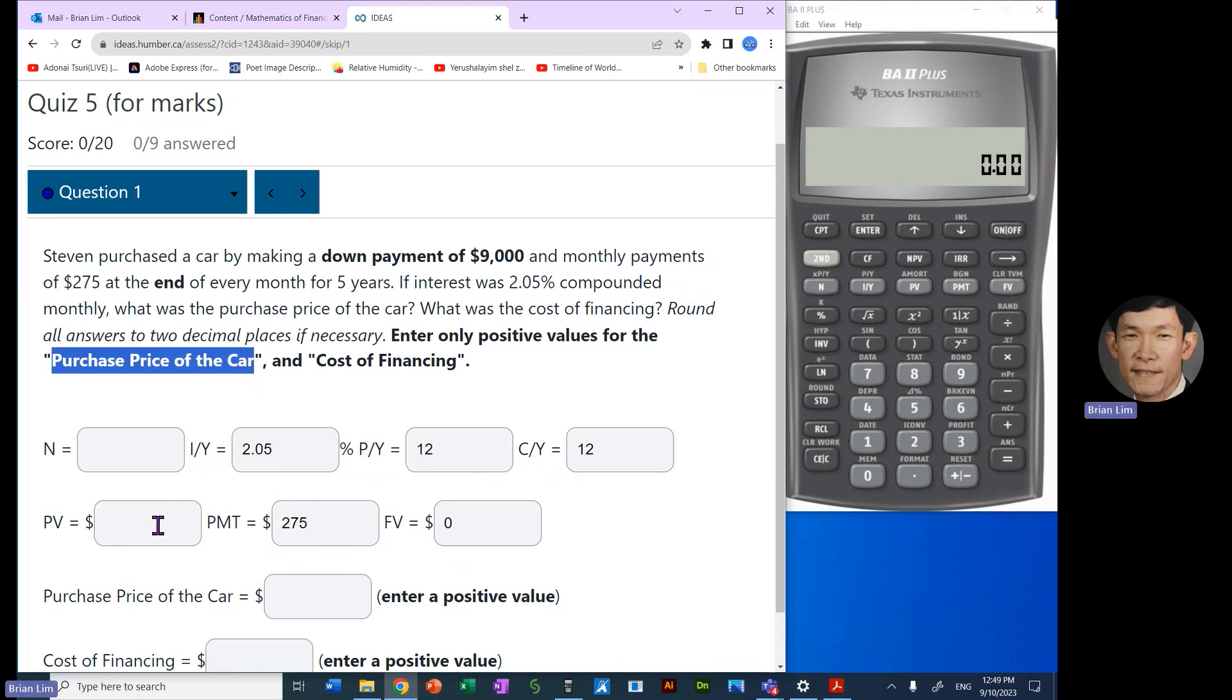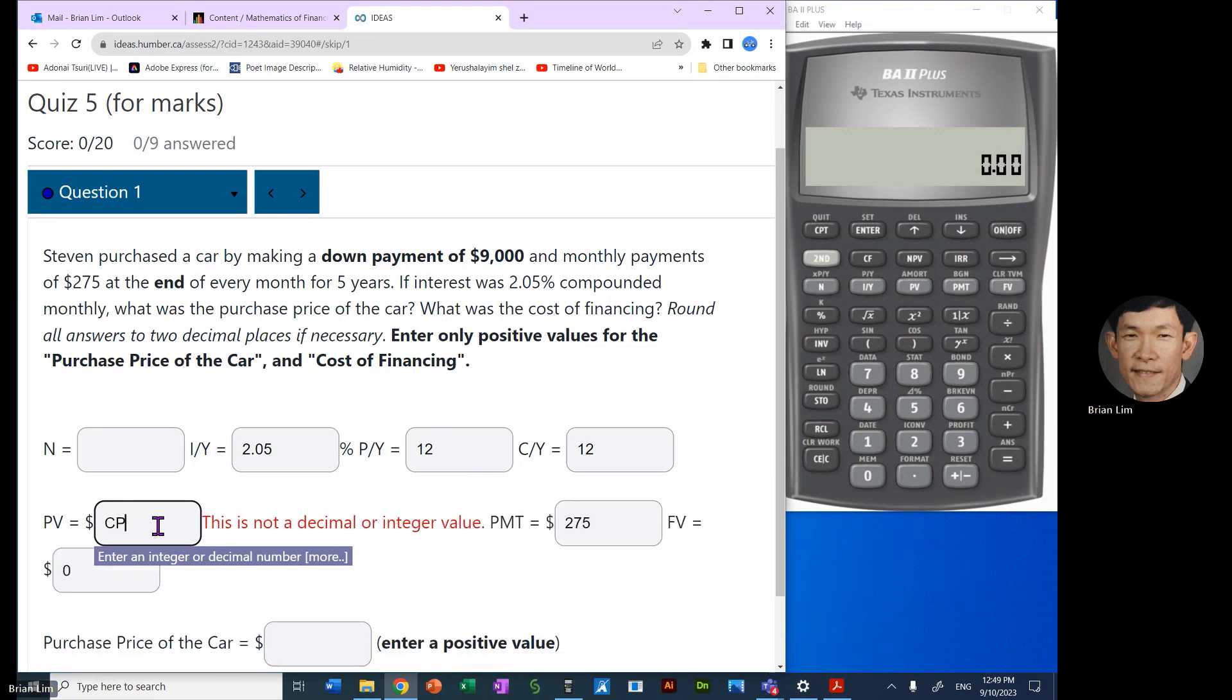So what we're calculating here, this present value, is for what Stephen was not able to pay for the full price of the car. Alright, so let us begin. And we will enter PY and CY as we normally do first. So second, IY. So PY is 12, and I will enter that. And I could go up or down. Let's go up and CY is also 12, so we don't need to enter it again. And we can quit second CPT. Come out of that menu after entering PY and CY.